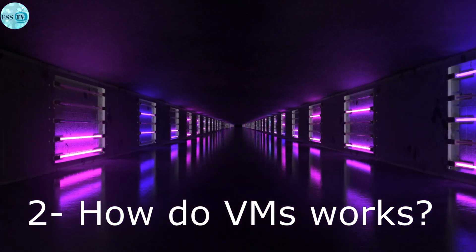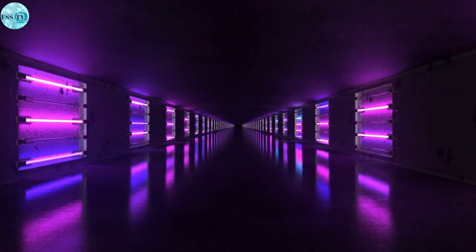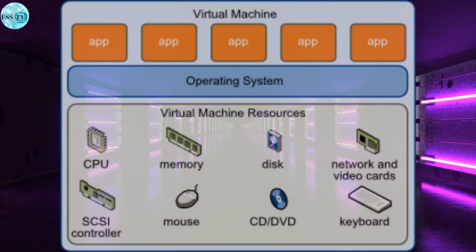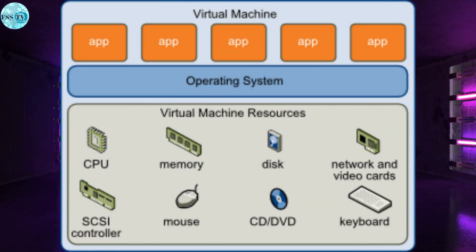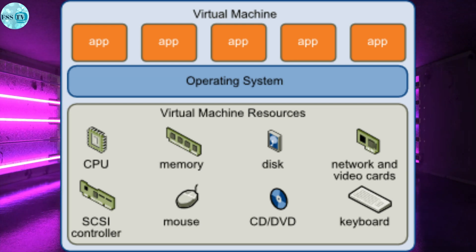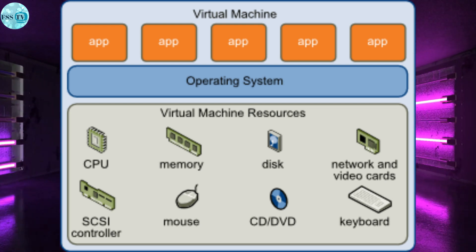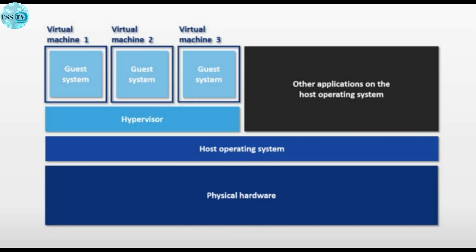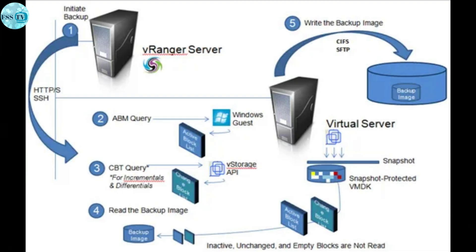How do virtual machines work? Virtualization is the process of creating a software-based or virtual version of a computer with a dedicated amount of CPU, memory, and storage that are borrowed from a physical host computer, such as your personal computer, or remote servers in a cloud provider's data center. A virtual machine is a computer file, typically called an image, that behaves like an actual computer.